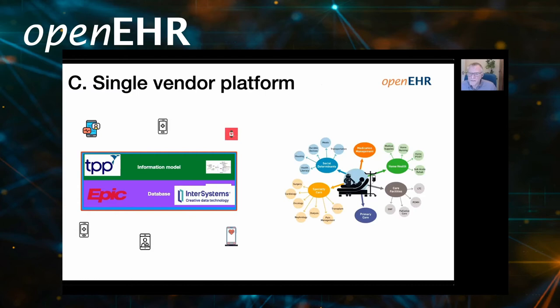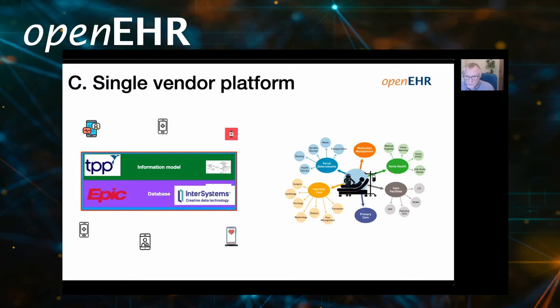We're also seeing in parallel the advent of what you might call the single vendor platform. This says let's have a system based on one application, but which then exposes its information model and database to third-party applications. We can see many big and medium-sized systems across the world starting to offer open APIs, transforming themselves from mega suites into essentially mega suite platforms. That's definitely a forward step. However, it still keeps the control of the information models and databases under the control of the vendor — they retain technical and commercial control.